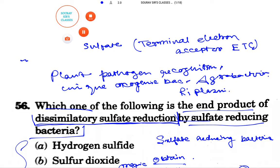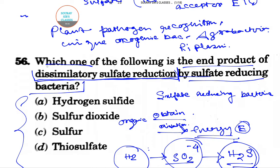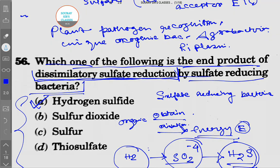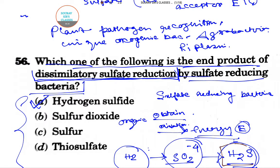So the question we asked was: which one of the following is the end product of dissimilatory sulfate reduction by sulfate-reducing bacteria? The answer is hydrogen sulfide, that is H₂S.